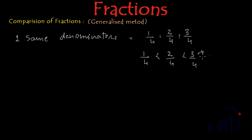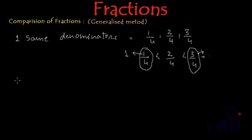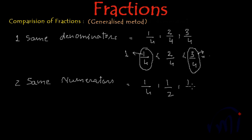The fraction which has a bigger number in the numerator holds the bigger value, and the fraction which has a smaller number as numerator — like this one has 1 as numerator — is smaller than 3/4. Then we had learnt one more method where we had same numerators, like 1/4, 1/2, 1/3, or 1/5.